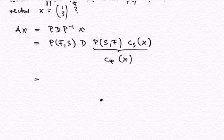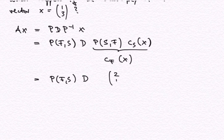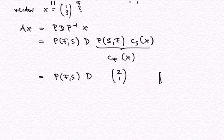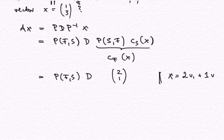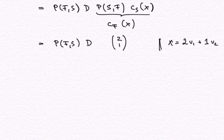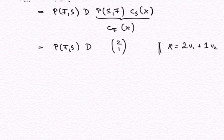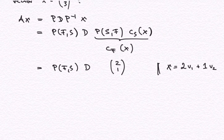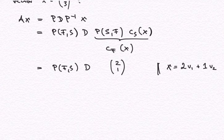We remember from the basis change video that this was the vector (2, 1) — the F coordinates of x — meaning that x can be written as 2 times v1 plus 1 times v2. So now we have understood the first part of this product: it gives us the F coordinates of x, changing the coordinates of x from standard to F.